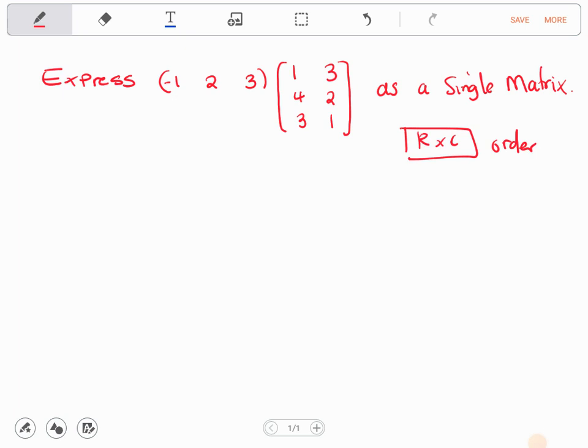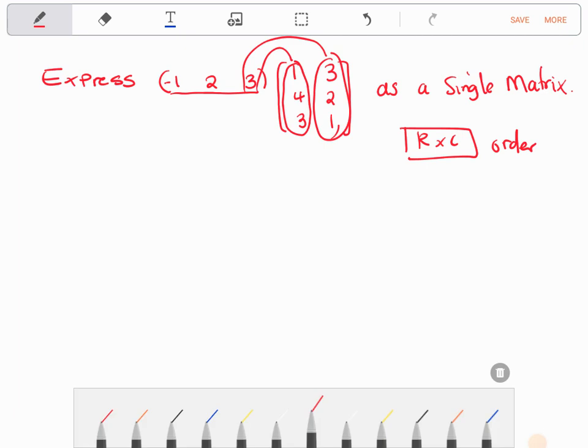So this is a single row which is going to multiply every column in the other matrix. This is what it means. So this will multiply there. It will also multiply there. Alright, let's get started.